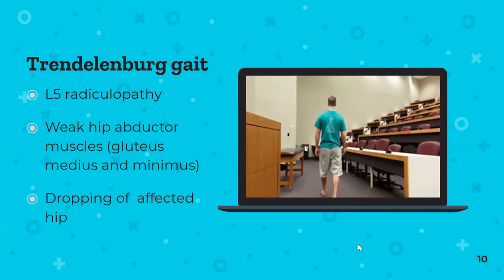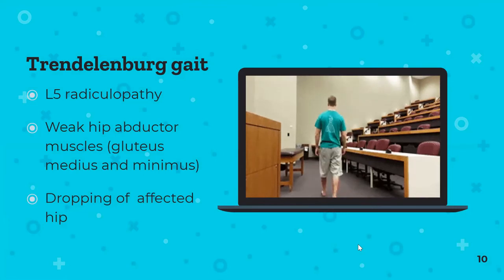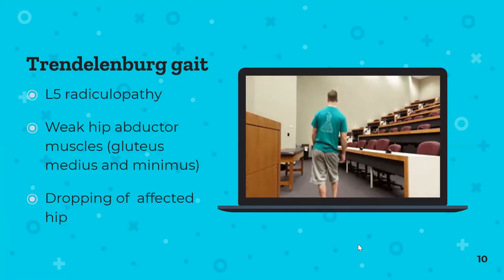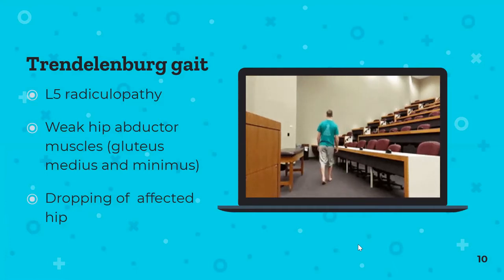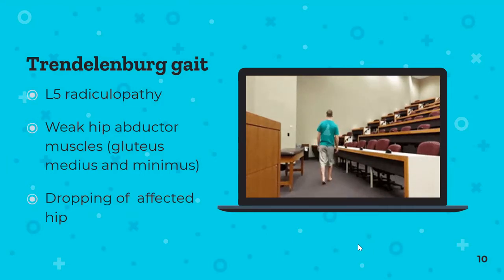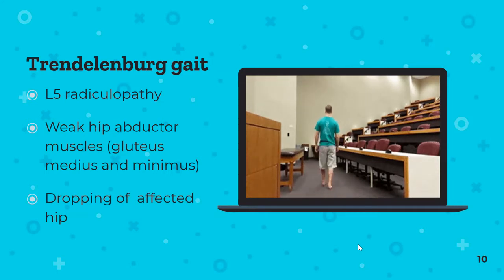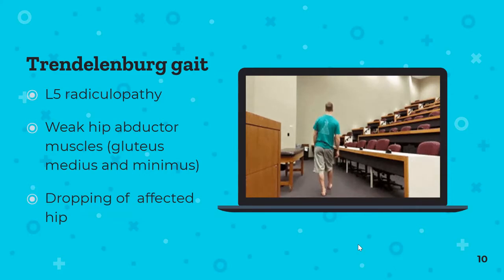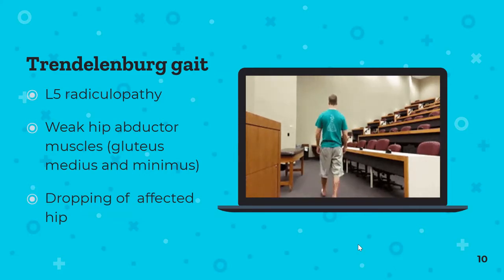Trendelenburg sign occurs with weak hip muscles — either a muscular cause like weakness of gluteus medius and minimus, or a nerve cause with L5 pathology. It presents as hip drop on the unsupported side when standing on one leg.